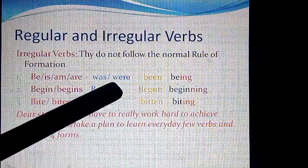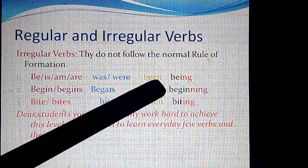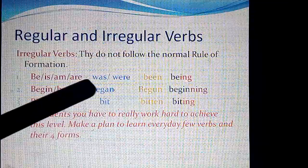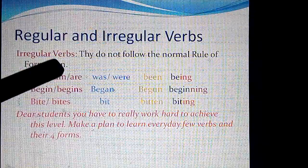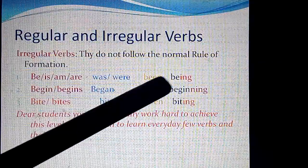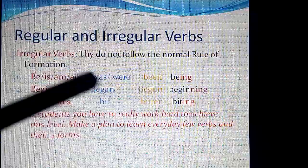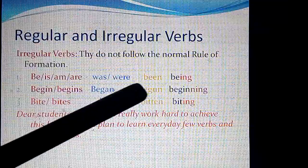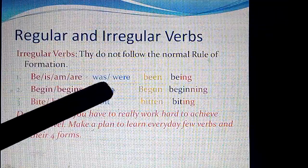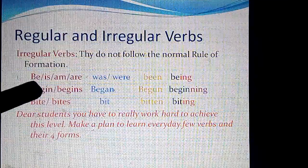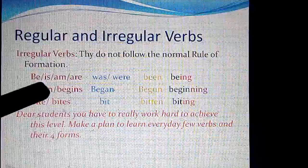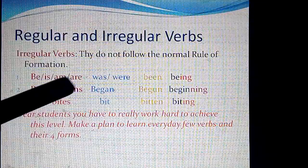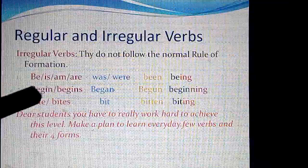The V3 form is 'been', and the -ing form is 'being'. There is often confusion with this word because it is used as a helping verb and sometimes as a main verb. In grammar questions at various exam levels, you are asked to write or fill in the blank with the appropriate form of 'be'. You should know that 'is', 'am', 'are', 'was', 'were', 'being', 'been' are all forms of 'be'.